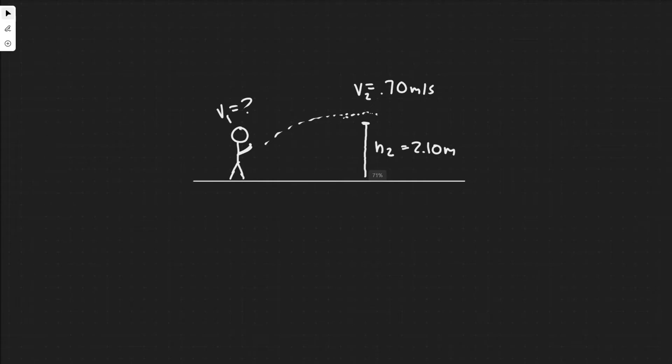So, the way we're going to solve this is by using the law of conservation of energy, which tells us the initial energy E1 has to be equal to the final energy. Because by the law of conservation, we know that energy can neither be created nor destroyed. Therefore, the energy in the beginning has to be equal to the energy at the end.